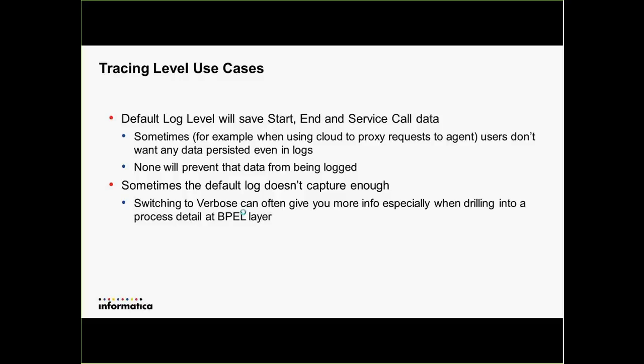Our default logging level saves the start and service call data in the process execution log, which we keep for one day after completion. Sometimes people don't want that — for example, if you're proxying information down to an agent where the real sensitive work is happening, you don't want that data recorded in the cloud anywhere, so you'd use 'none' to prevent all that data from getting logged. Sometimes the default level doesn't capture enough and you switch to 'verbose.' Most of that extra verbose information is available only in the process detail at the BPEL layer, but it can be useful when diagnosing a tricky problem.